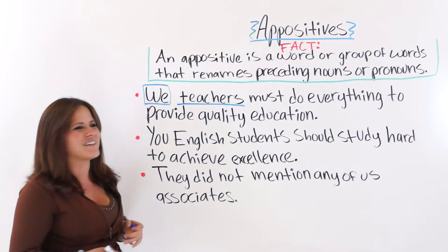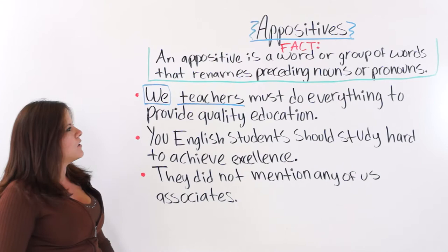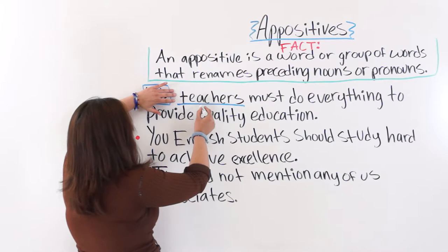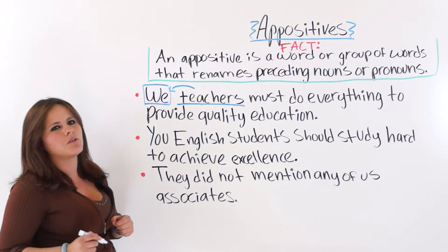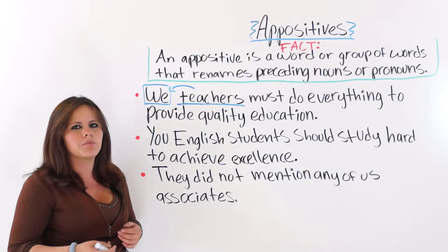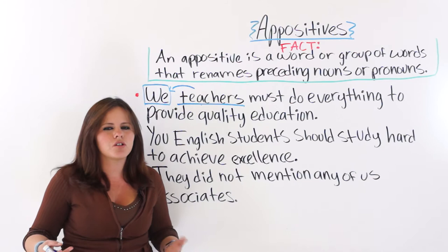So, 'we teachers must do everything to provide quality education.' If you take 'teachers' away, 'we' is no longer an appositive — it is the subject. If you keep it here, 'we' is also the subject, but 'teachers' renames that pronoun. For example: 'we teachers,' 'you students,' 'they people' — these all follow this pattern.